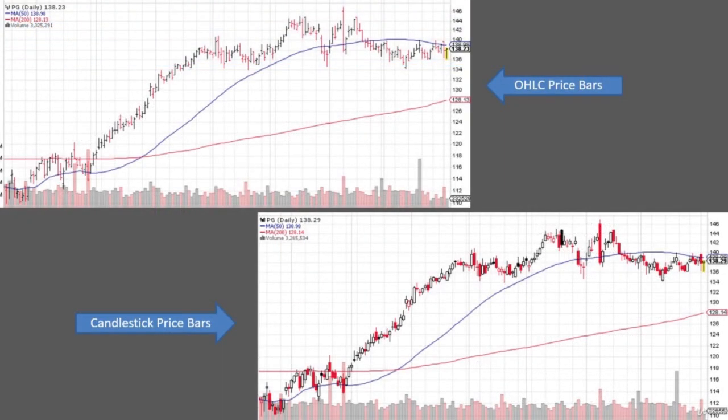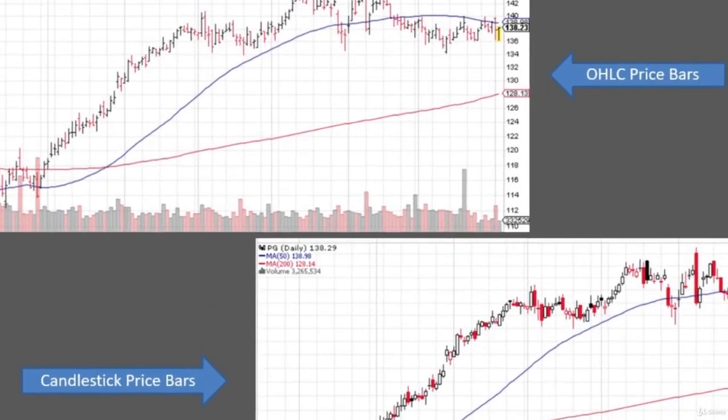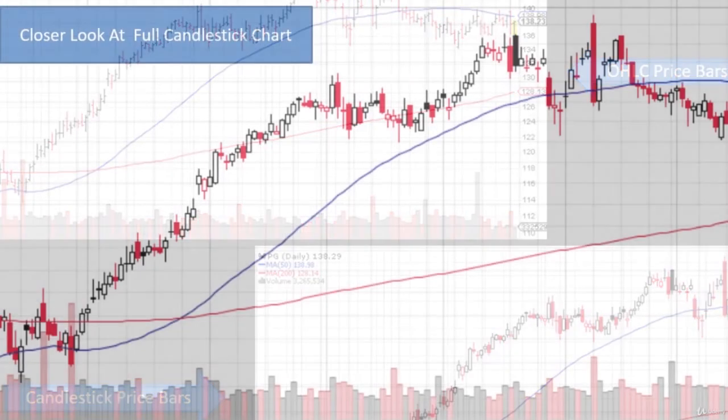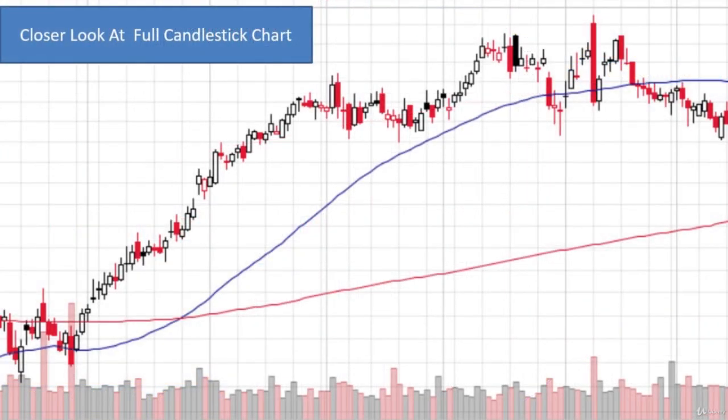Here's an example of the same exact security showing the same period—what it would look like with open-high-low-close bars versus candlestick bars. You can kind of see they look similar but they also look different too. Now one thing with candlestick bars is there's things that can be indicated. They give you more information within a pattern or the shape of the candle itself. Here's a closer look at the candlestick bar chart as an example, and you can start seeing that you have these different heights.